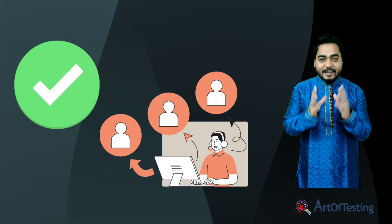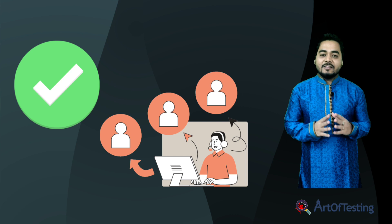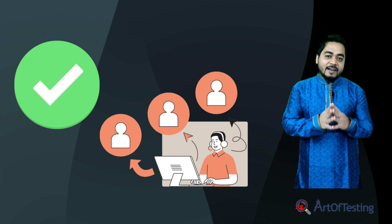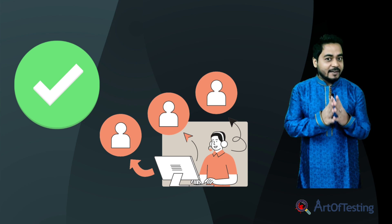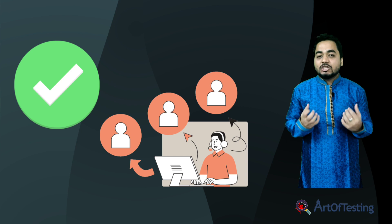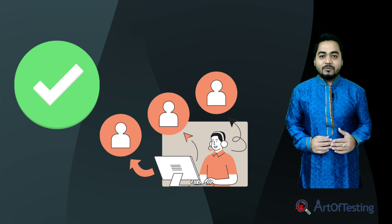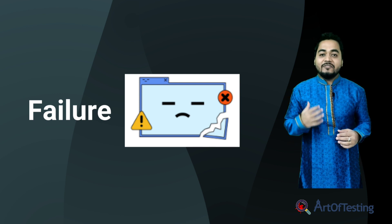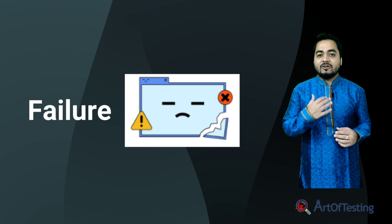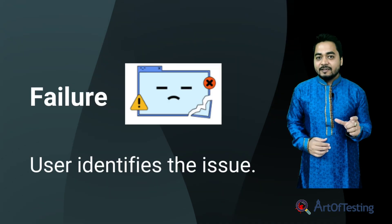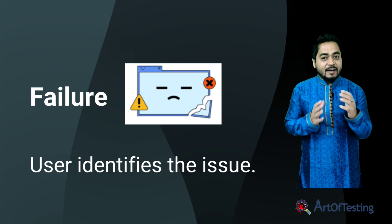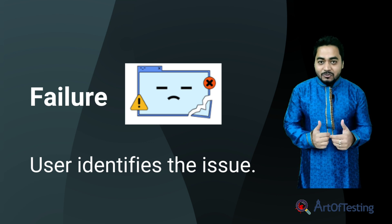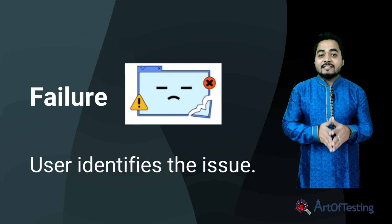When the product is fully tested and certified by QA that it can go into production, the software is deployed to the client side. When the client or actual user of the software uses the product and identifies an issue or deviation in the functionality of the software, that is called a failure. Failure is a deviation in the software functionality when it has reached the end customer and end users — it is on the production system and is live.